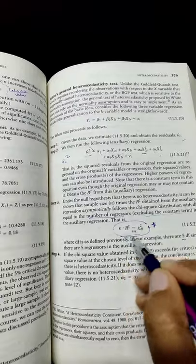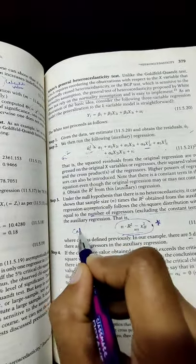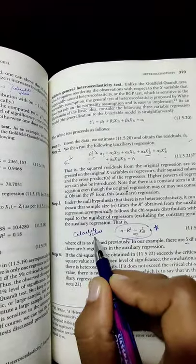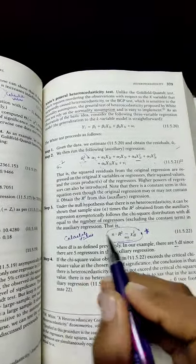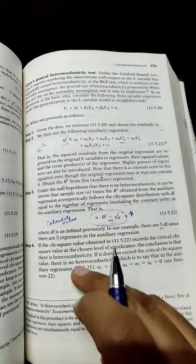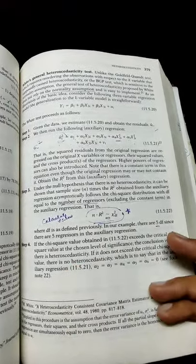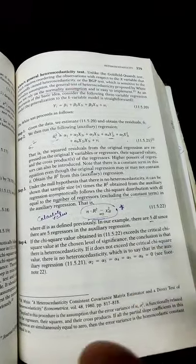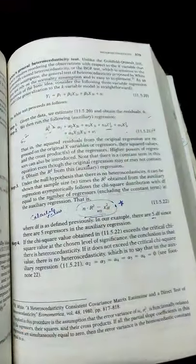If the calculated value, as compared to the tabular value or critical value, is greater, we will reject the null hypothesis. Otherwise we will accept the null hypothesis. If we reject the null hypothesis, it means heteroscedastic. If we accept the null hypothesis, it means homoscedastic.